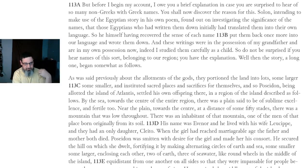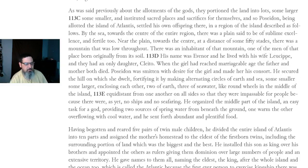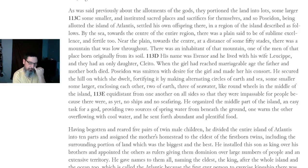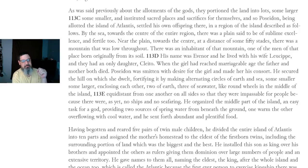Well then, the story — a long one — begins somewhat as follows. As was said previously about the allotments of the gods, they portioned the land into lots, some larger, some smaller, and instituted sacred places and sacrifices for themselves. Poseidon, being allotted the island of Atlantis, settled his own offspring there, in a region of the island described as follows.